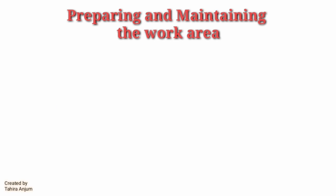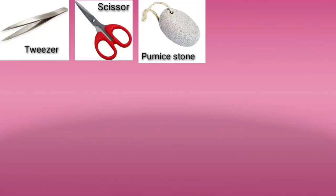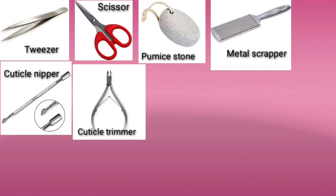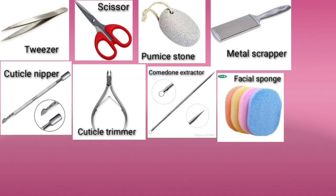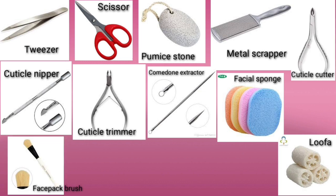Next is equipment and materials used in beauty salons. The common equipment and tools used include: tweezers, scissors, pumice stone, metal scrapper, cuticle nipper, cuticle trimmer, comedone extractor, facial sponge, loofah, cuticle cutter, and face pack brush. These are all the common equipment used in a beauty salon.